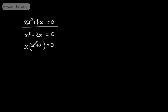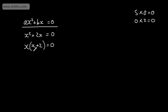We now have x multiplied by x plus 2 is equal to zero. Either one or both of these must be equal to zero — for example, 5 times zero equals zero, or zero times 3 equals zero. So we set each factor equal to zero: either x is equal to zero, which gives us one solution, or x plus 2 is equal to zero, which means x is equal to minus 2.